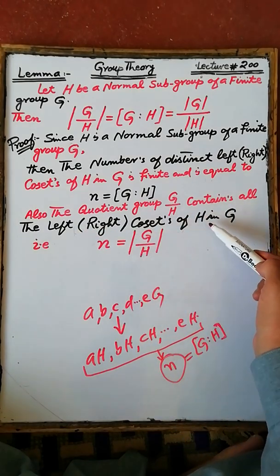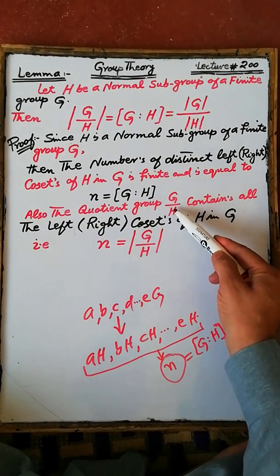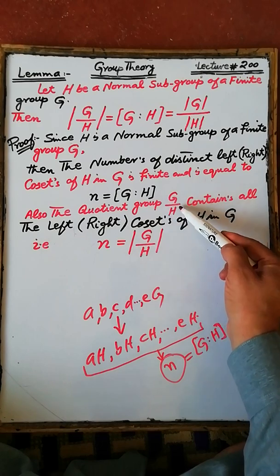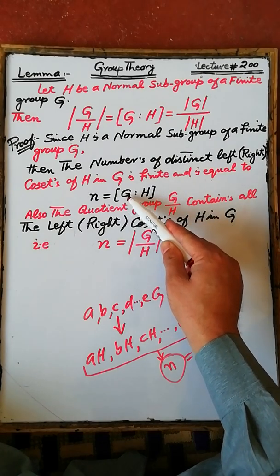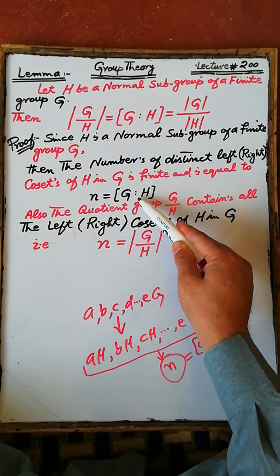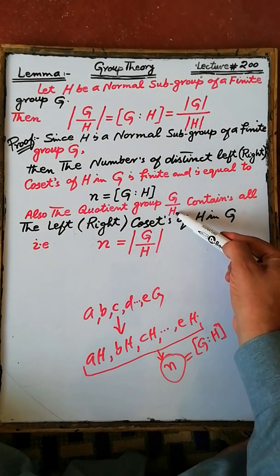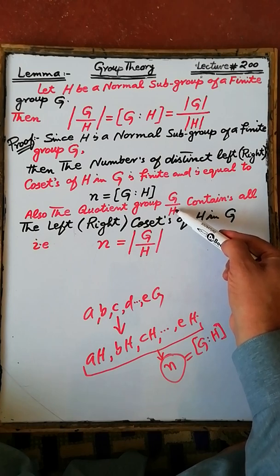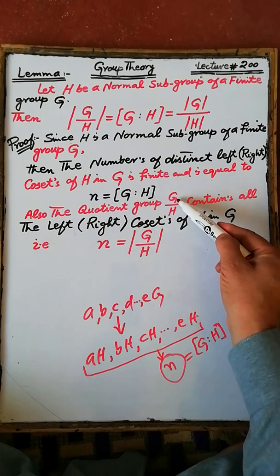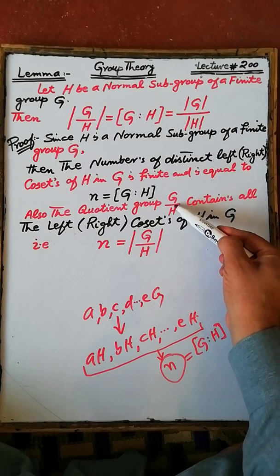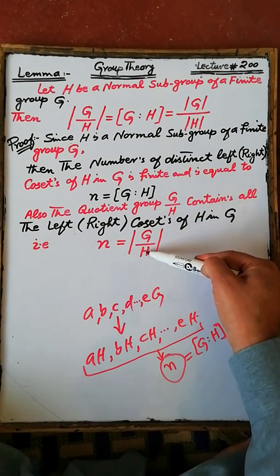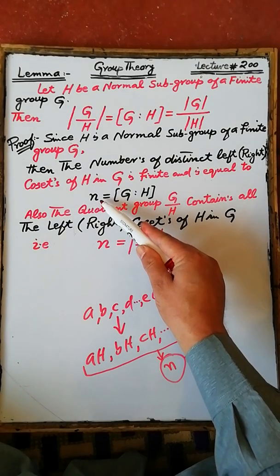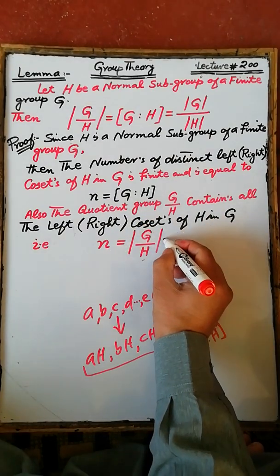All of these left or right cosets are contained in the set G/H. According to our previous lecture, discussed in lecture number 199, the set G/H is a subgroup of G. Therefore the order of the subgroup G/H is also equal to n, which is equal to the index of the subgroup H in G.